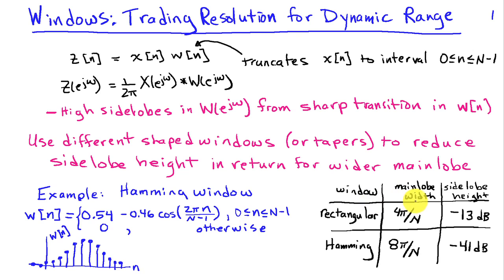But you can see that it turns on more slowly and turns off more slowly than the rectangular window. If we evaluate the main lobe width as a measure of resolution, and then the relative side lobe height as a measure of dynamic range, we find that the rectangular window has a main lobe width of 4 pi over n, and a side lobe height of negative 13 dB.